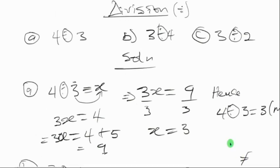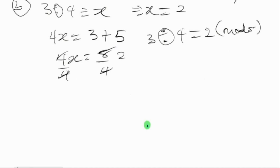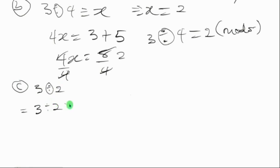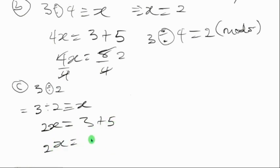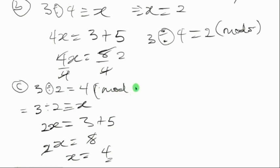For C we have three divided by two. If you still don't understand anything, feel free to ask — comment your questions or ask on LearnTube. Three divided by two is equivalent to x, so 2x equals three. Adding five to make it a dividend: 2x equals eight. Dividing both sides by two gives x equals four. So three divided by two equals four in mod five.